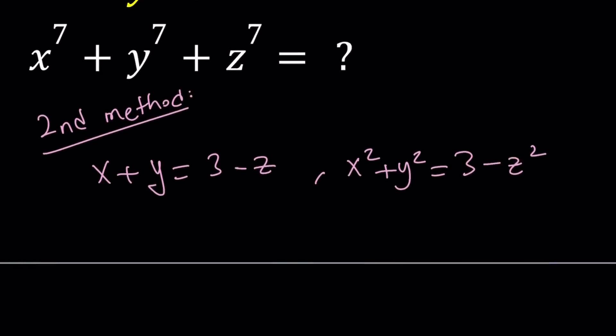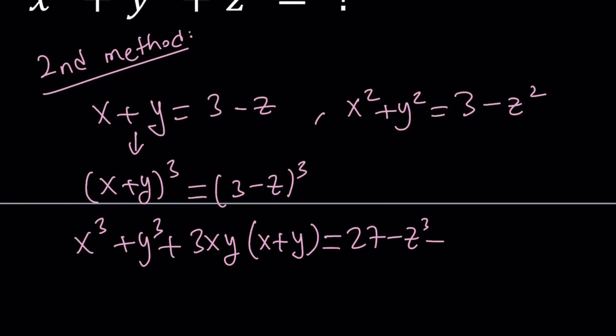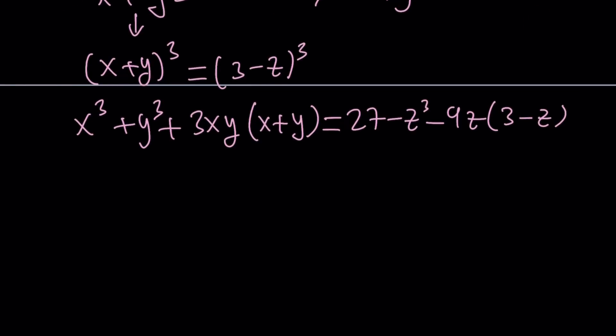Let's go ahead and cube both sides. If I cube x plus y, I usually cube it like this: x cubed plus y cubed plus 3xy times x plus y. That's also used with the cubic formula. And the right hand side, I'm going to cube it like this: a cubed minus b cubed minus 3ab times a minus b. There's a formula for the minus version. It just makes it a little easier for me.